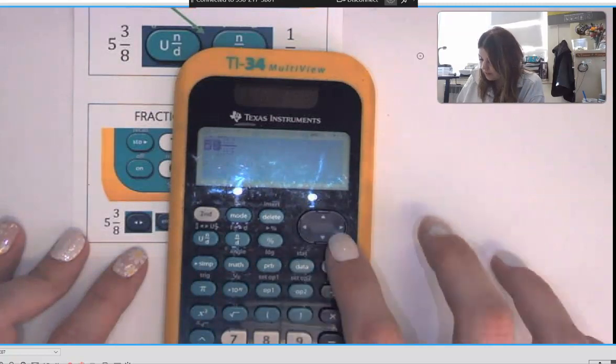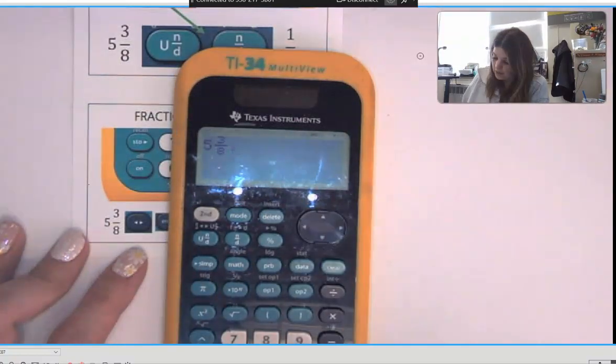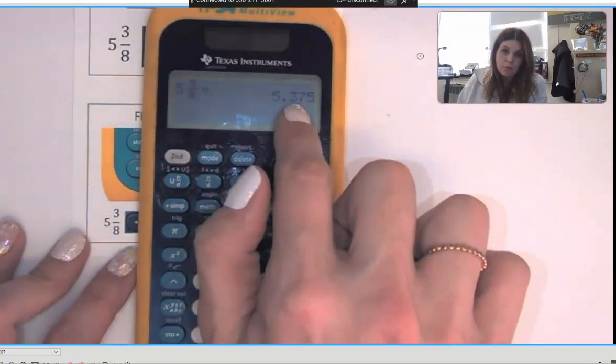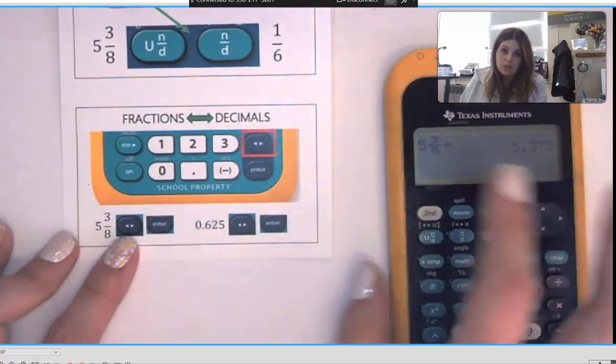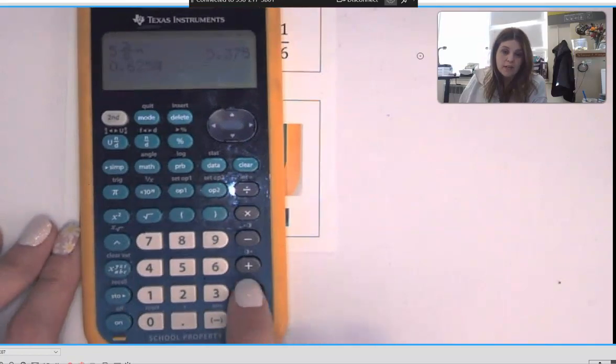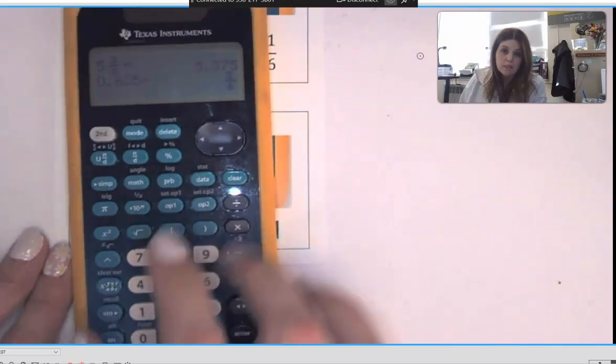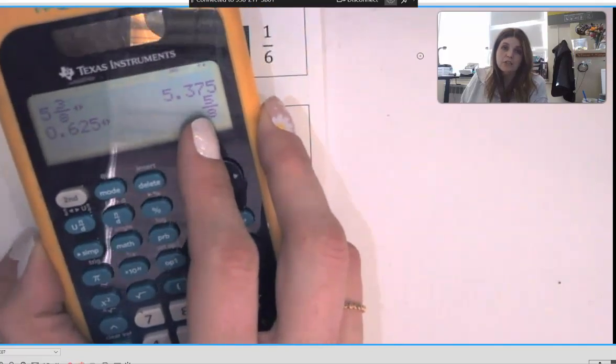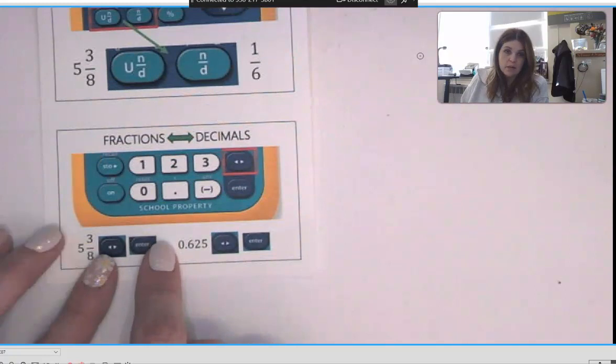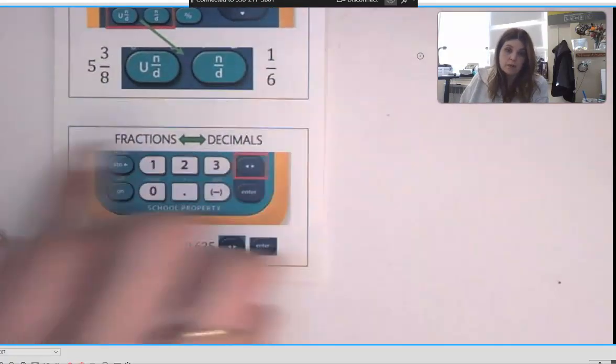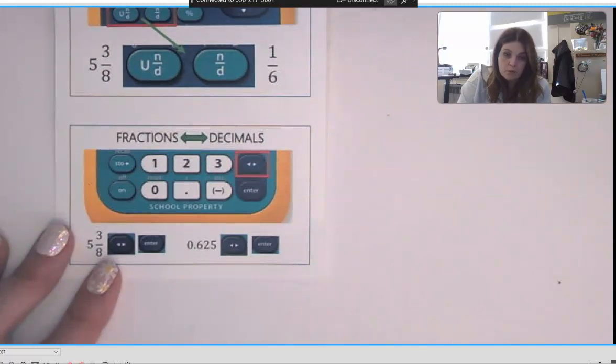So like if you want to convert five and three eighths to a decimal, you're going to use your mixed number button, type in five and three eighths, arrow over, and then hit this double arrow button. So that would change it to 5.375. If you wanted to change 0.625 into a fraction, you type in 0.625 and you hit the double arrow button. That's five eighths. And what you would put into Canvas is five backslash eight. So this is your box that reminds you if you want to convert you have to hit your double arrow button.